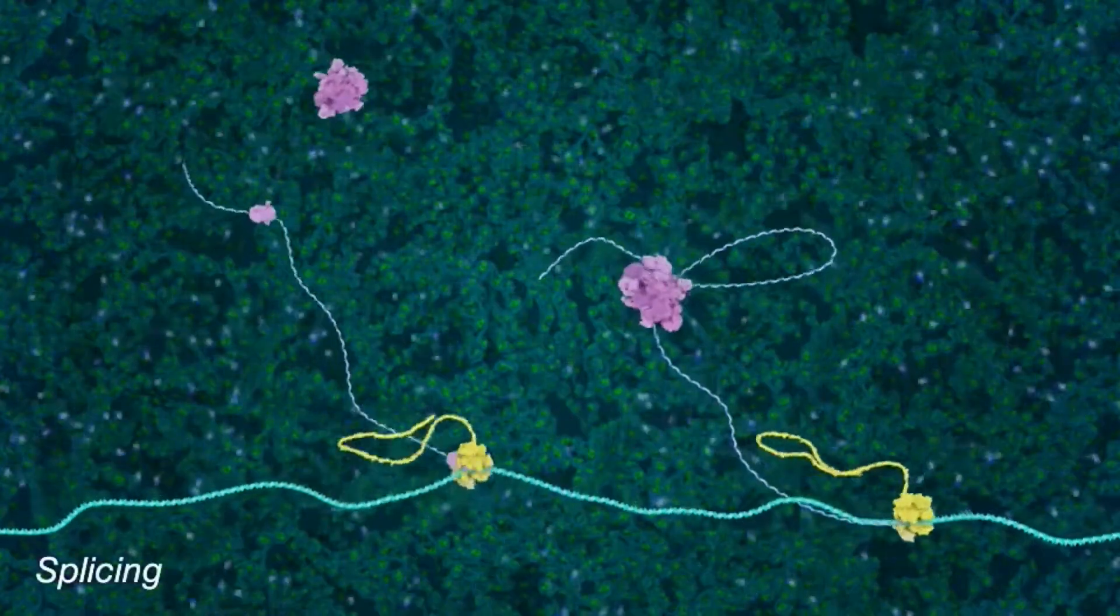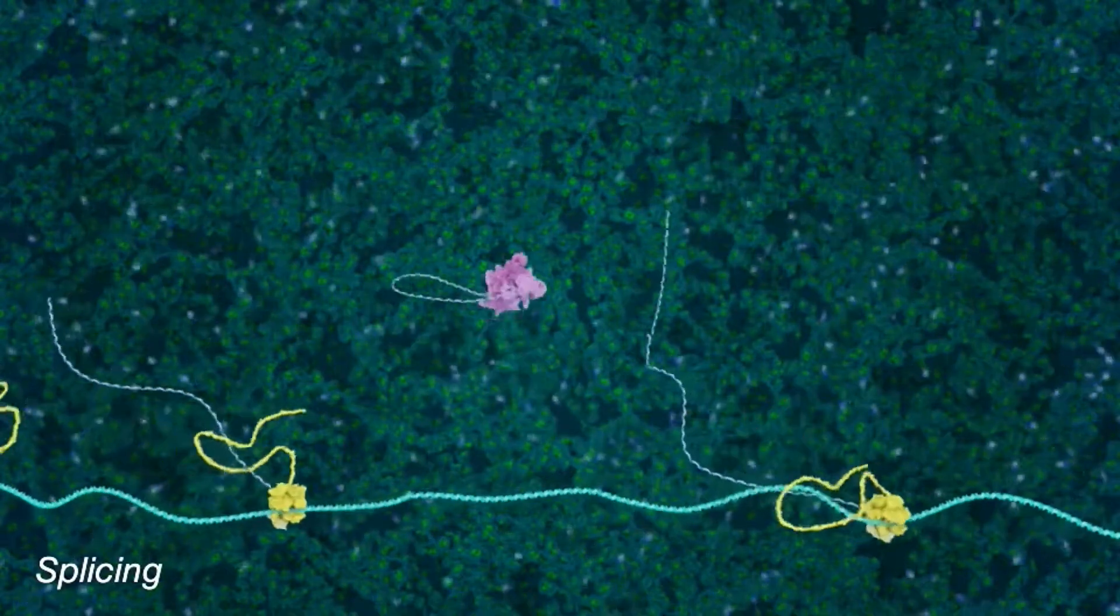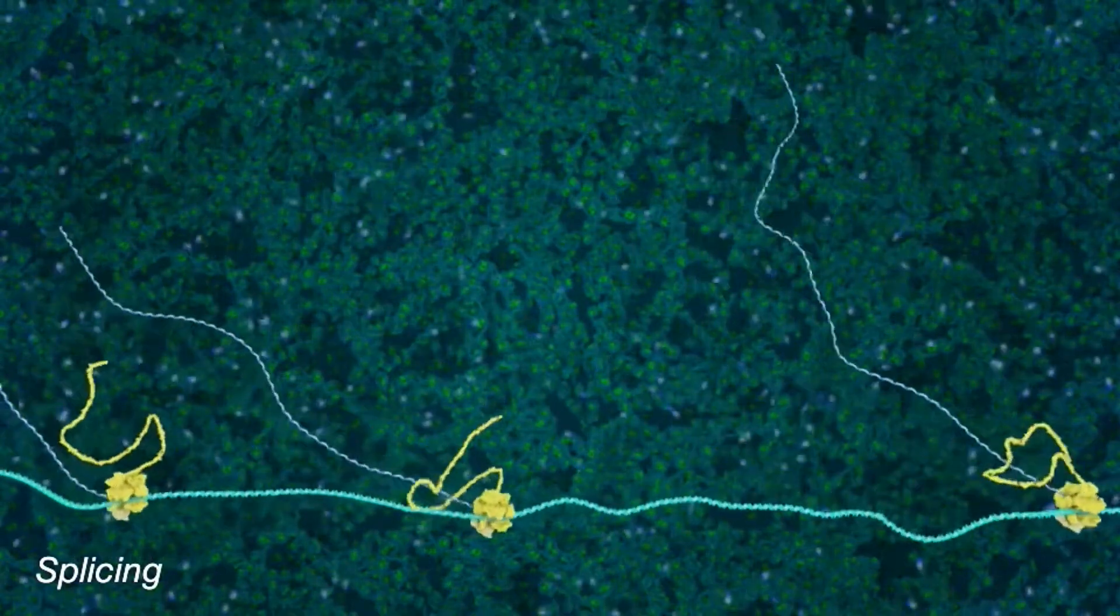As viral RNAs are produced, some are spliced, that is looped, cut, and glued back together, producing RNAs of different lengths.